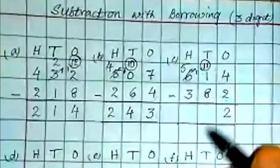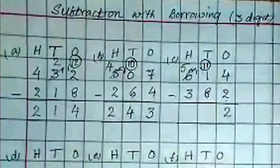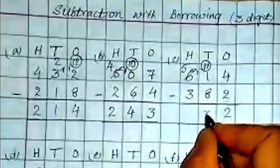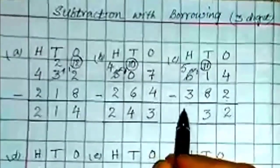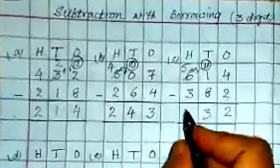Now after 8 till 11, you count. After 8, 9, 10, 11. So 3 are left here. Now 5 minus 3. 2.